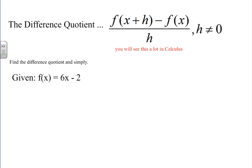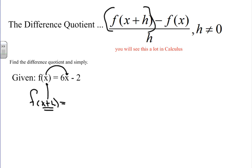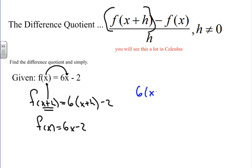Let's try another one — a simpler one. We have f of x equals 6x minus 2. We have f of x plus h minus f of x, all over h. f of x plus h means I'm taking x plus h and substituting it into my equation wherever there's a placeholder, wherever there's x. So I'm going to have 6 times x plus h, minus 2. And f of x is 6x minus 2. So we have: 6 times (x plus h) minus 2, minus f of x which is 6x minus 2, all over h.